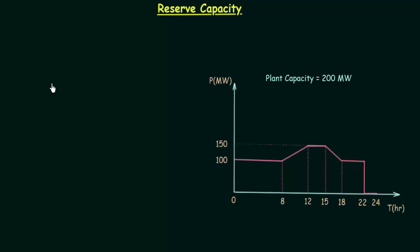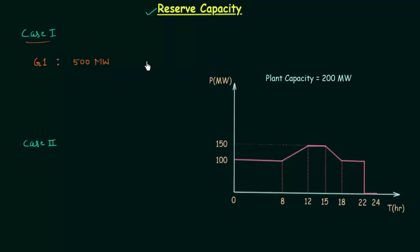In the last lecture we completed utilization factor and now I will explain reserve capacity. I will take two different cases, case 1 and case 2, to explain the reserve capacity. In case number 1, let's say we have a power plant in which there is only one generator installed, and the capacity of this generator, the installed capacity, is 500 MW, and the maximum demand Pmax is equal to 350 MW. In this scenario we have to find out the reserve capacity.